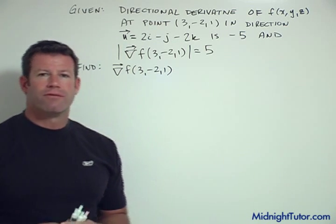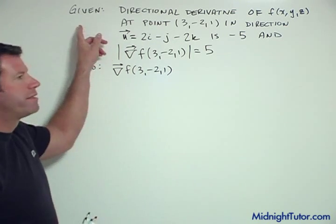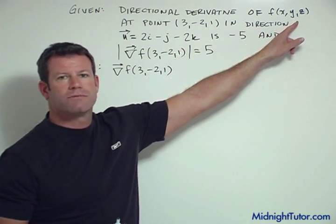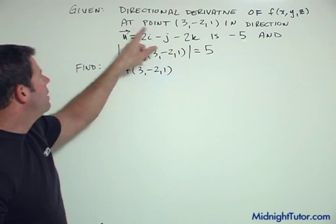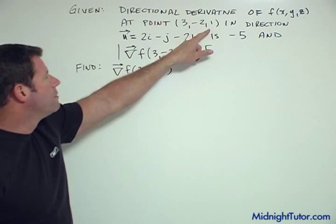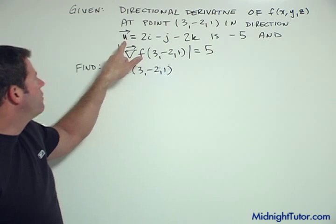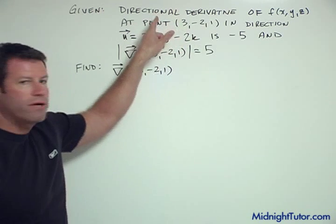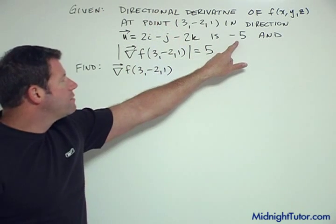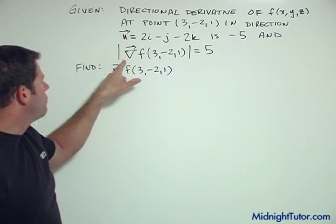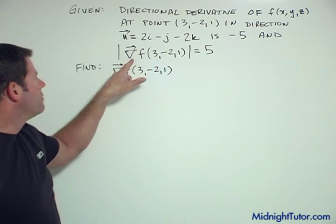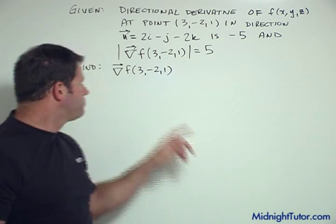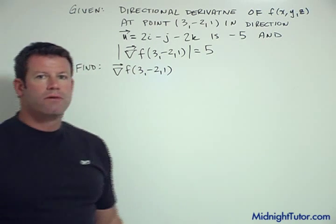Let me read the problem statement. Given the directional derivative of this function f of three variables x, y, and z at (3,-2,1) in the direction of this vector u=2i-j-2k, that the value of that directional derivative is -5, and we're told that the magnitude of the gradient of f at that same point is +5. Find what is the gradient of f at that point.